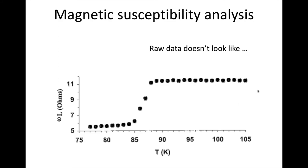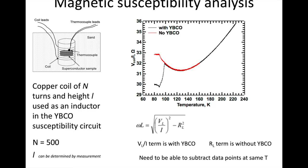Our raw data doesn't necessarily look like the ideal curve. For our magnetic susceptibility, we have a run where we take the superconducting pellet, put it in the coil, and run it from low temperature up to high temperature. This black curve is more or less what we get from that run — you can see a sharp transition but also some curvature. If we repeat that run without the YBCO or superconductor, we get the red curve, which is kind of flat and then decreases and goes back up.